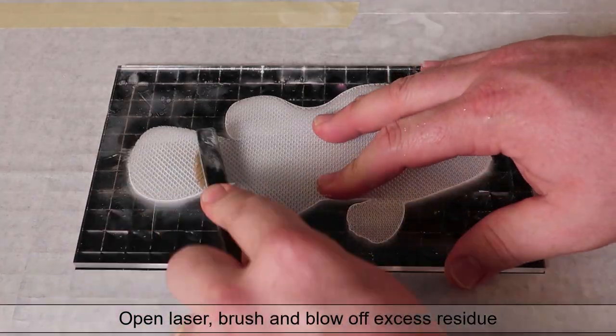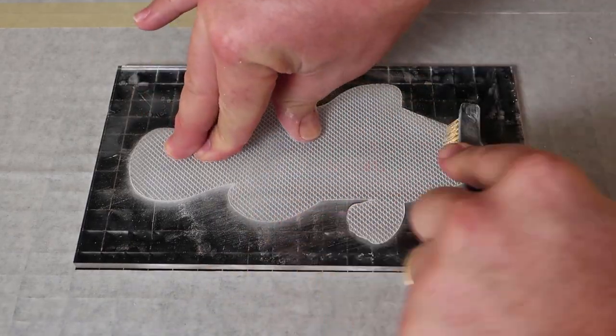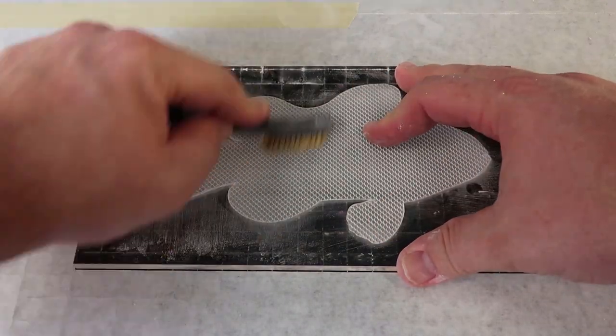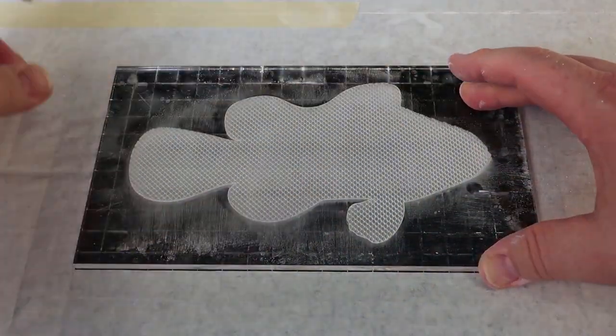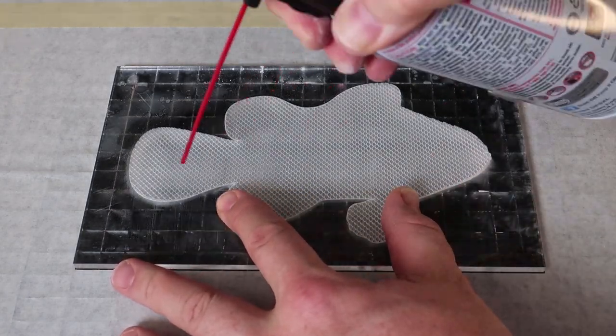After the texture is engraved, open the laser and use a coarse brush to brush the residue from the surface. In this example I am using a brass wire brush. Once the acrylic has been brushed, use a can of air or a compressor to blow off any excess residue and adjust the part back to the template.